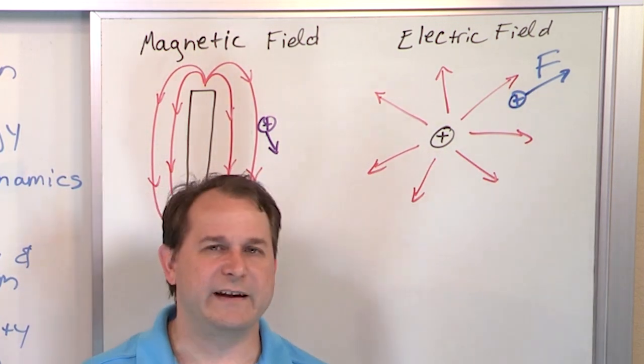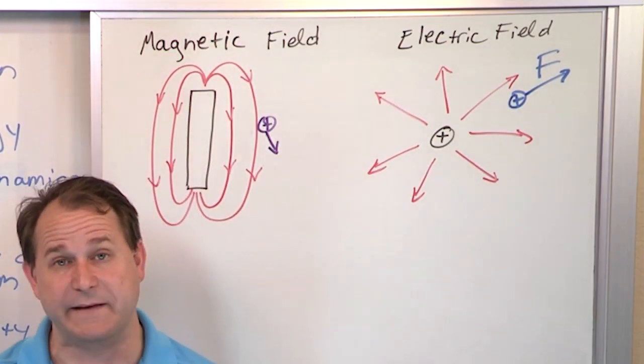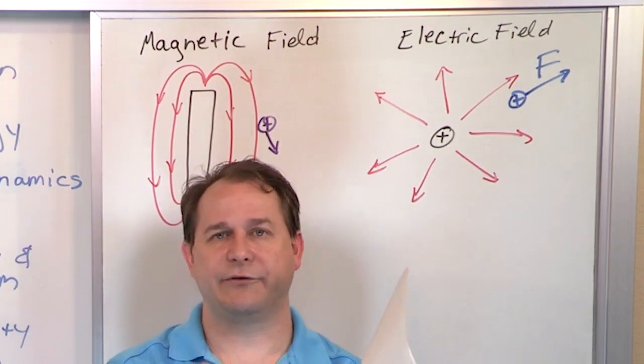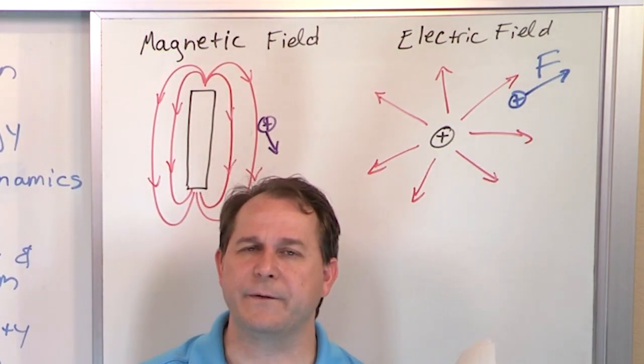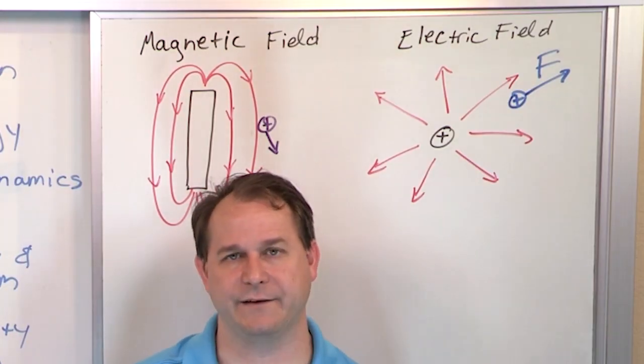So we know they're similar, electricity and magnetism, but they're not quite the same. I should revise that and say that modern physics has combined electricity and magnetism, which seem to be very different things, into a single thing called electromagnetism. You may have heard of that.